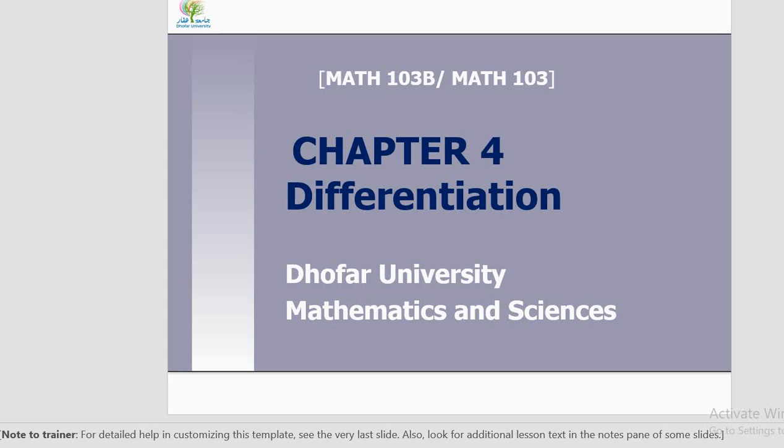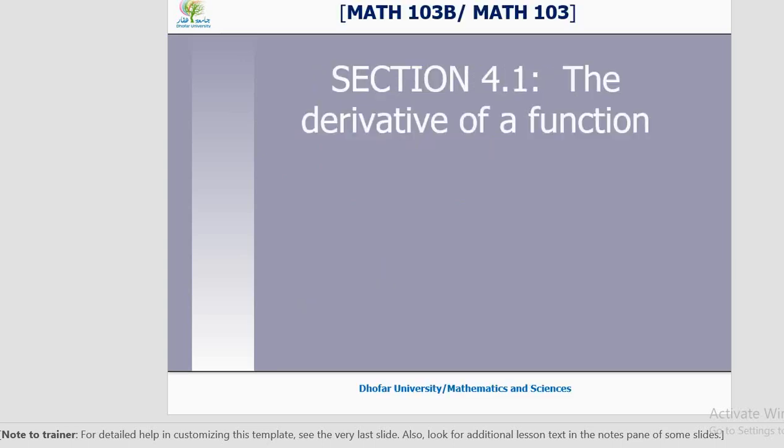What is the derivative of a function? We have done straight lines — straight lines have a fixed slope, which we call y equal to mx plus c, where m is the slope and c is the y-intercept. So the derivative is all about slopes.